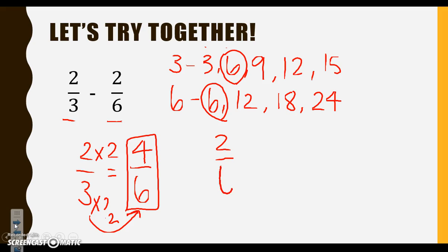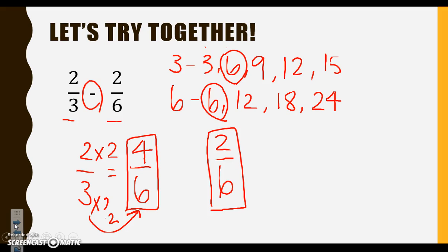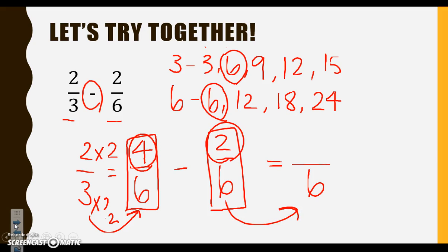Now let's take a look at 2 over 6. Lucky for us, we don't have to change this fraction since we wanted a denominator of 6 to begin with, so that one stays the same. Are we finished? No — we have to look back and see what operation we are working with: it's subtraction. Just like addition, when we subtract fractions our denominator remains the same, so we know that's 6. We bring it over and look at our numerators — we're doing 4 minus 2, which leaves us with 2. Our final answer is 2 sixths.